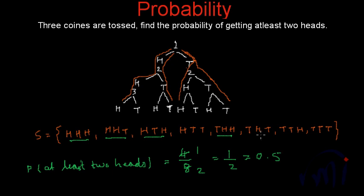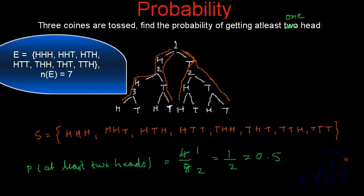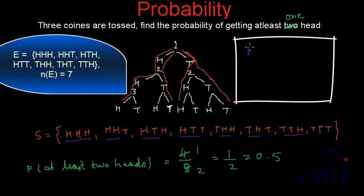Now if I change the question to at least 1 head instead of at least 2, the sample space remains the same but the number of favorable outcomes changes. We now count all outcomes except TTT, giving 7 favorable outcomes. So the probability of getting at least 1 head is 7 out of 8.